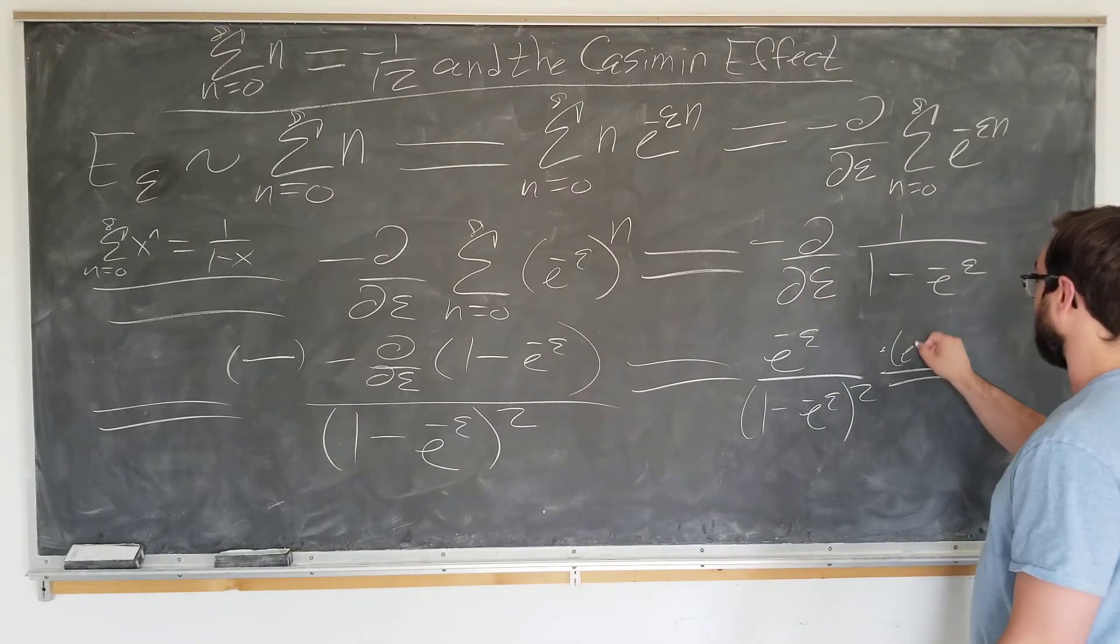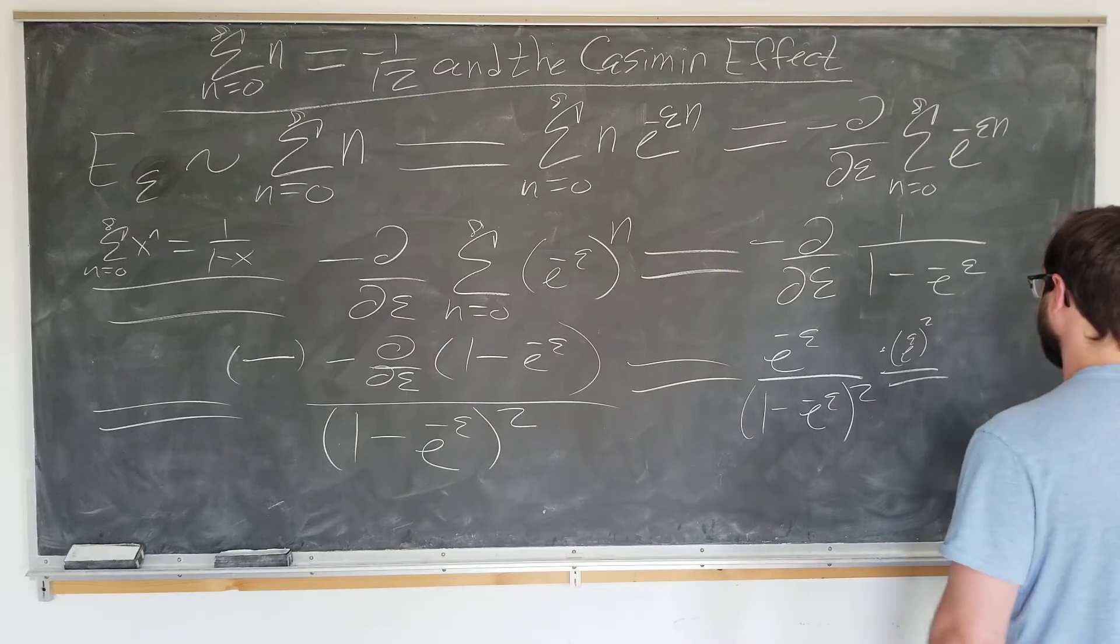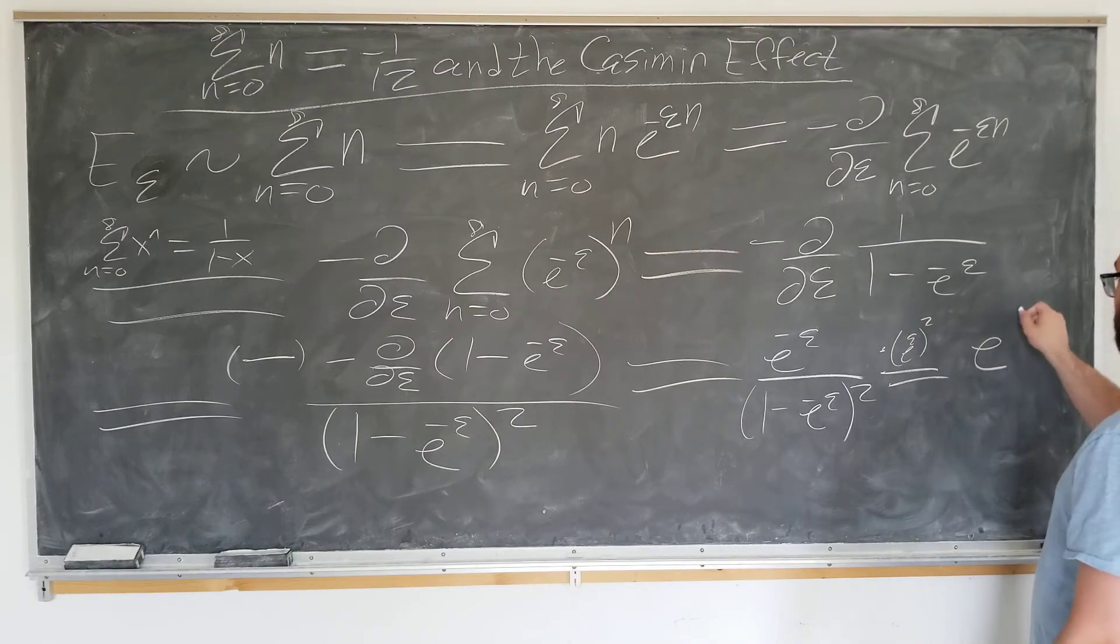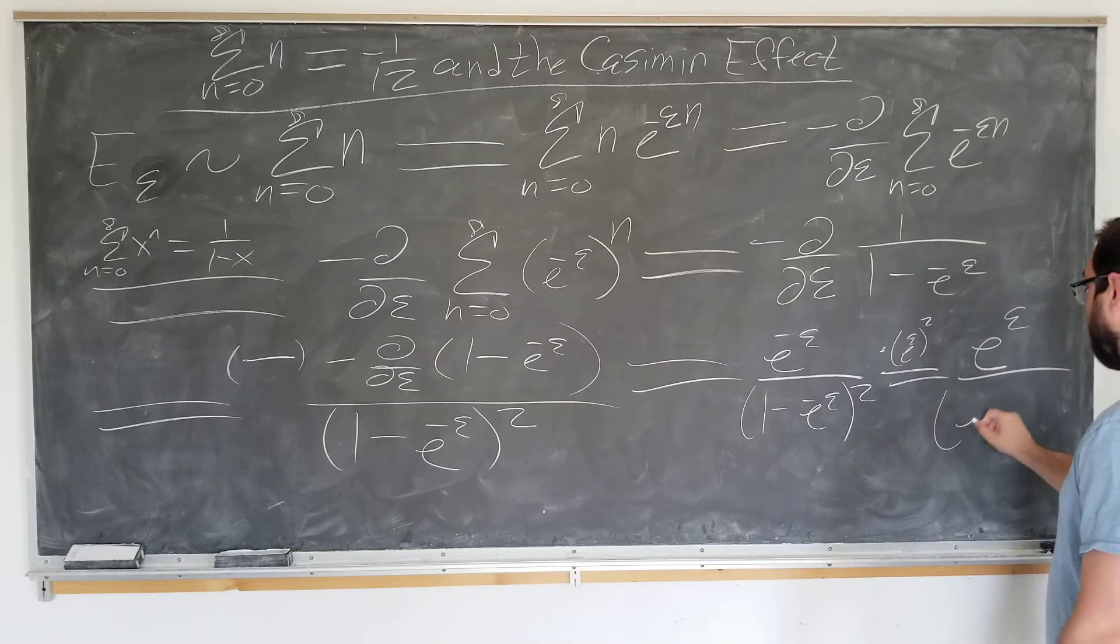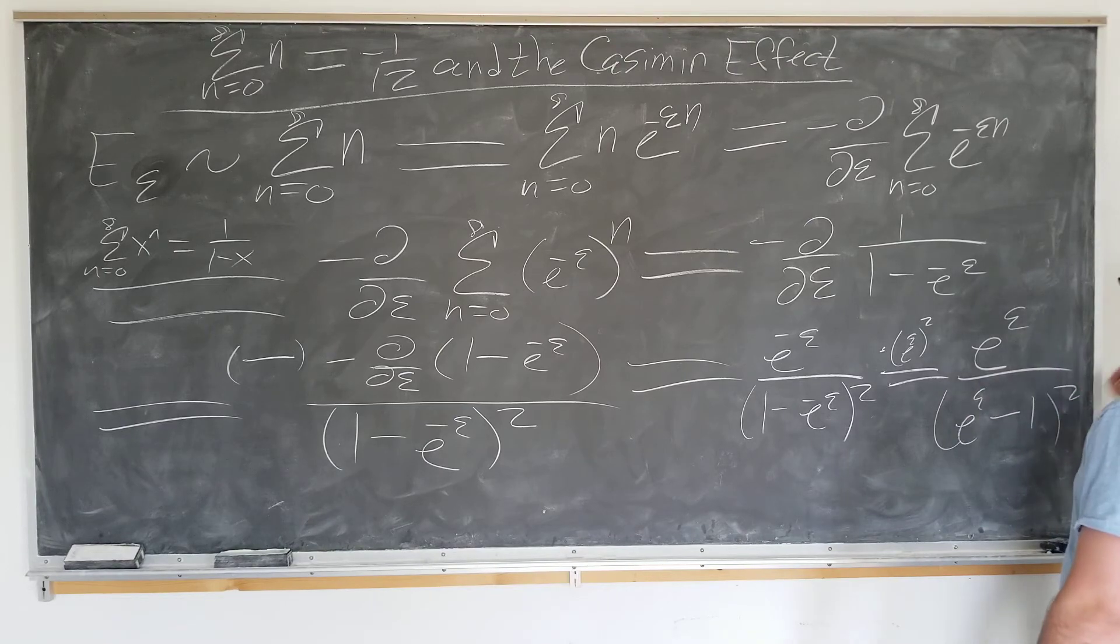Excellent. Now we're going to multiply top and bottom by e to the epsilon squared. To write finally, e to the epsilon over e to the epsilon minus 1 squared.